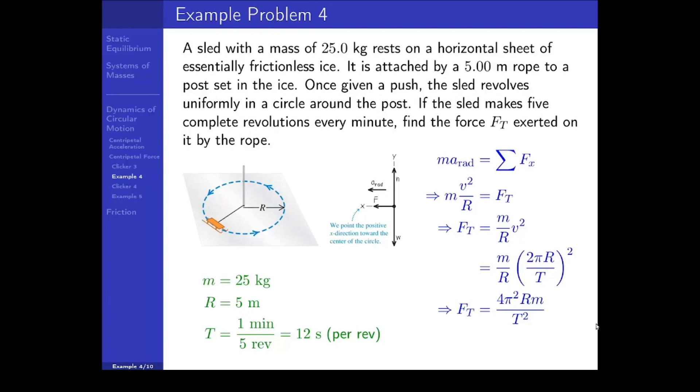Plugging in all the values that we were given, we find that the tension force is 34.3 Newtons. That rope better be able to handle that much tension. So in this case, what was the centripetal force? It's the tension force. It's the tension force that is responsible for the inward acceleration causing the circular motion.